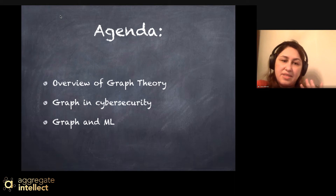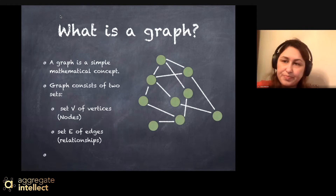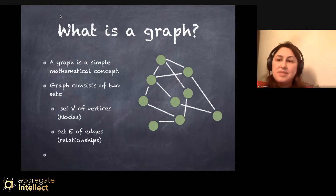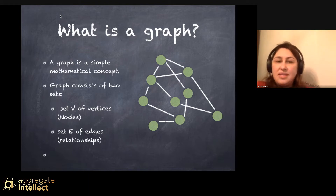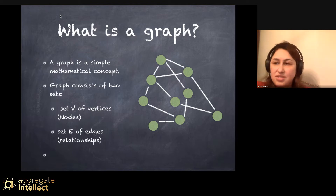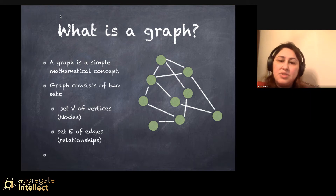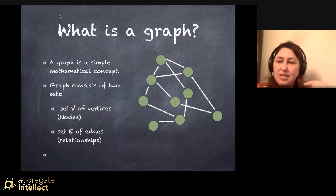And lastly, I will talk about graph and machine learning. So, what's a graph? Graph is a very simple and quite old mathematical concept. It is a data structure consisting of a set of vertices or nodes and a set of edges or relationships, and it shows relationships between each of those nodes.